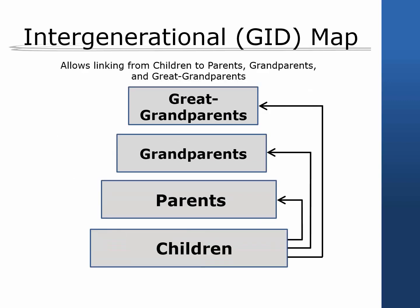The intergenerational GID map matches PSID individuals to their predecessors, going back up to three generations, from children to parents, grandparents, and great-grandparents. This intergenerational map is retrospective in nature — that is, it starts with an individual and goes back along his or her family lineage.